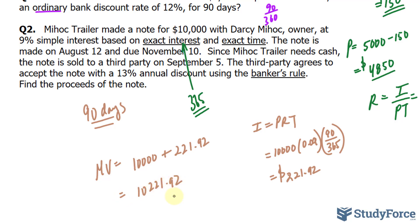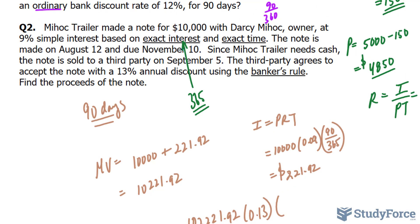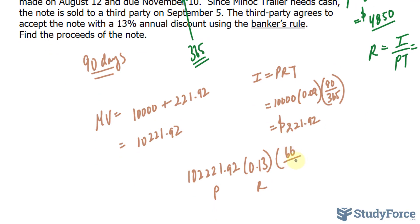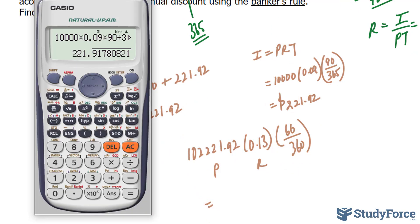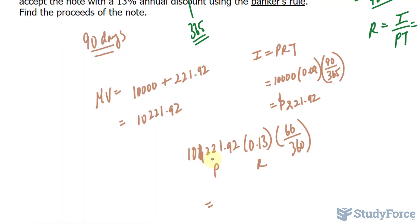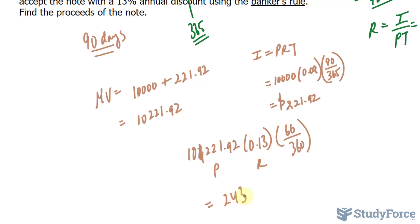From here we can calculate the third party discount by taking the maturity value of 10,221.92, multiplying it by 0.13 — that's the rate — and the time between September 5th and November 10th, which is 66 days, divided by 360 because of the bankers rule. Calculating: 10,221.92 times 0.13 times 66 over 360 gives us 243.62.